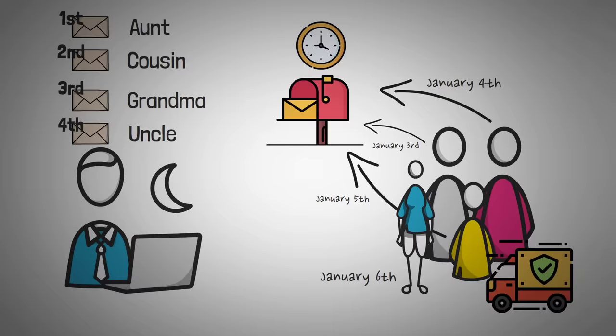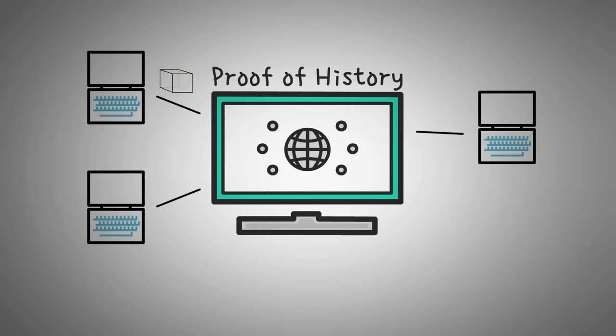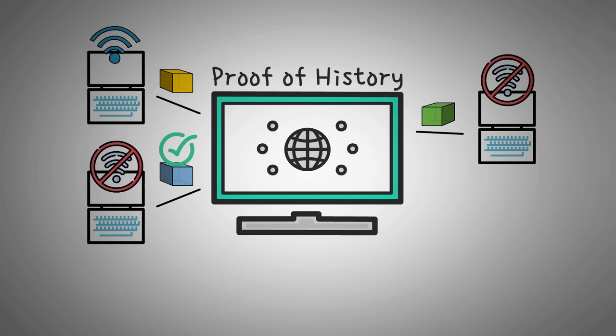Basically, proof of history allows nodes to just keep throwing a bunch of blocks at us. And since some people have faster internet than others, we can assume that they're telling the truth about their sending date, and then organize them after we get them, then add them to the blockchain.